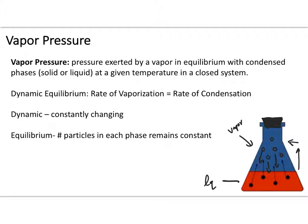Dynamic equilibrium is called such because it's dynamic — particles continuously move back and forth between phases — and at equilibrium because the overall quantity of vapor above the liquid and liquid below both remain constant. Temperature, pressure, and intermolecular forces can all affect a substance's vapor pressure.